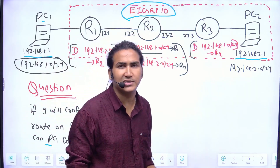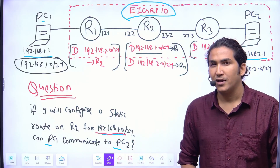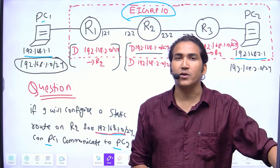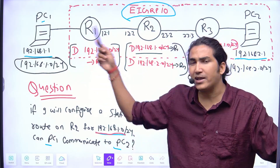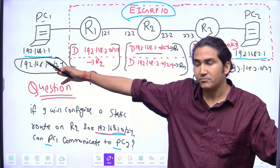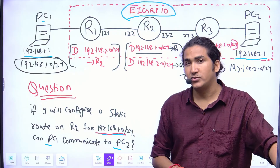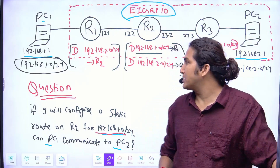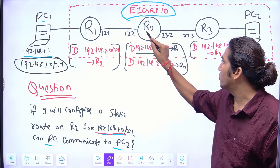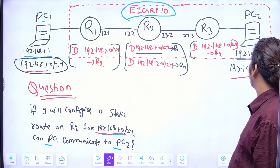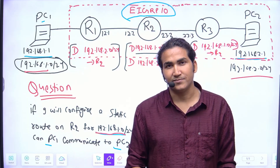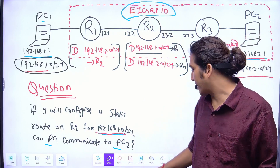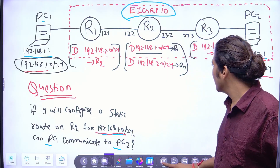If I configure a static route on R2, router 2 will prefer the static route over EIGRP because static route has a lower AD value. But will ping work? Will PC1 and PC2 be able to communicate? If your answer is yes — that ping will work, router 2 will prefer the static route, and LAN users can communicate with no issue — then you are wrong. The correct answer is no. If you configure a static route on R2, either for LAN subnet 1 or LAN subnet 2, then LAN users cannot communicate with each other.